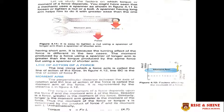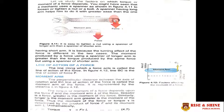Let us study the factors on which torque depends. In this picture, two spanners are shown — one spanner has a longer arm and the other has a shorter arm. The moment arm is the perpendicular distance between the axis of rotation and the point where we apply force. With a longer moment arm, we can apply less force and still produce greater torque. With a shorter moment arm, we must apply more force, making it more difficult to produce the turning effect.